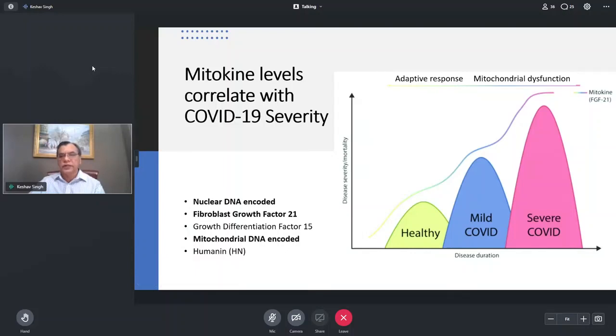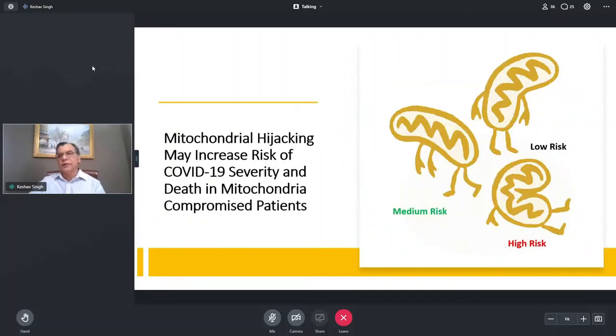And then when we look at the severity of the disease correlating with the healthy individuals, those who had mild COVID and the severe COVID, there seems to be an increasing amount of FGF21 in the blood of these individuals saying that this may serve as a good marker for measuring the severity of the disease.